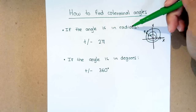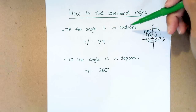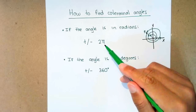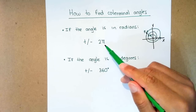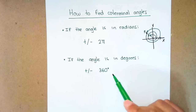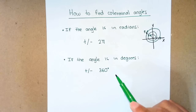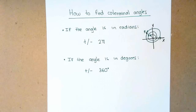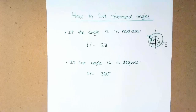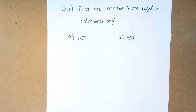So if your angle is in radians, you're going to add or subtract 2 pi, because 2 pi equals 360 degrees in radians. If the angle is in degrees, you're going to add or subtract 360 degrees. Whenever you're asked to find coterminal angles, add or subtract 2 pi or 360, depending on the unit.